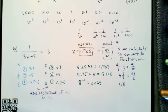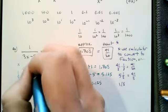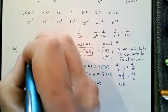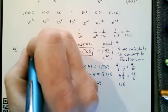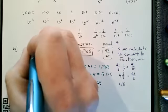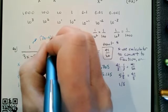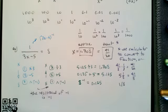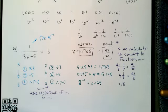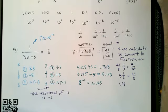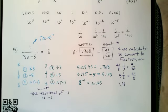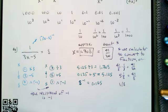What we're doing is viewing (3x minus 5) in the denominator as (3x minus 5) to the negative 1 exponent.